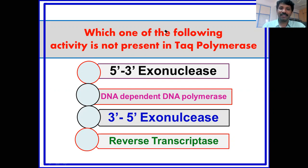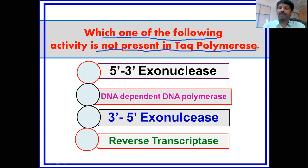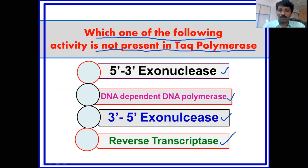So the question is: which one of the following activities is NOT present in Taq DNA polymerase? The options are: five-prime to three-prime exonuclease activity, DNA-dependent DNA polymerase, three-prime exonuclease activity, and reverse transcriptase. Which one is not present in Taq DNA polymerase?